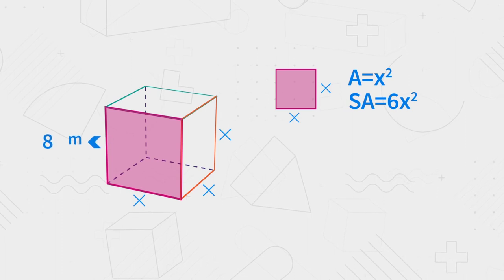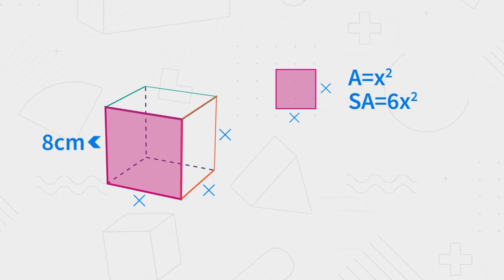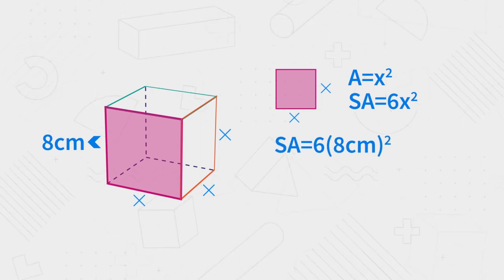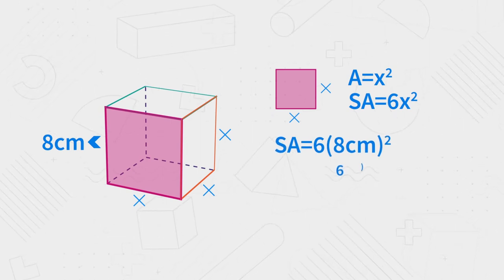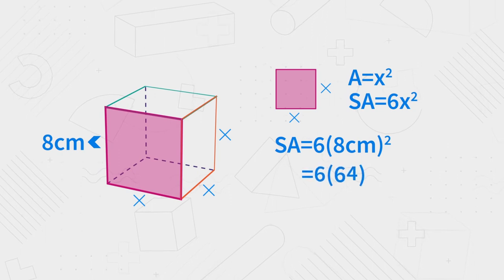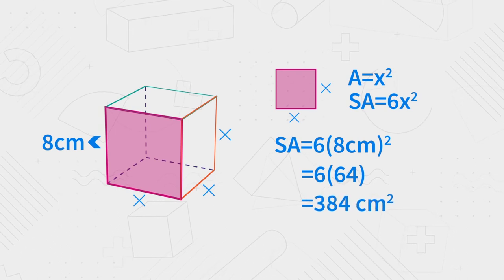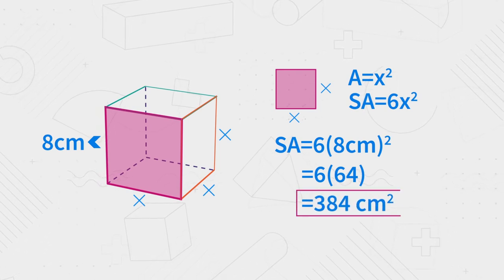And so let's say if the side length of a cube is 8 centimeters, the surface area is going to be 6 times 8 centimeters squared. 8 squared is 64, and 6 times 64 is 384, and it's going to be squared centimeters.